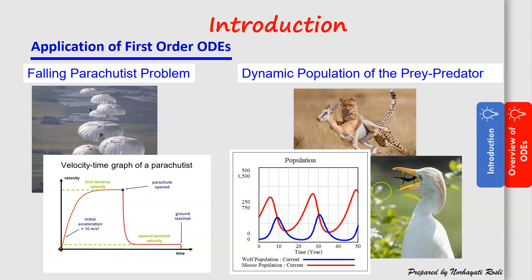Another application of ordinary differential equations is the dynamic population of prey and predator. The prey, for example, is a deer, and the predator in this case is a jaguar. The population dynamics of this prey-predator system can be represented by the rate of change of the number of that population with respect to time. Because we have two species, the differential equation will be a system of two ordinary differential equations, giving us the population dynamics for both prey and predator.